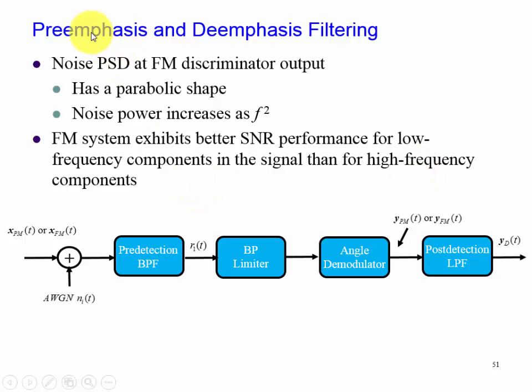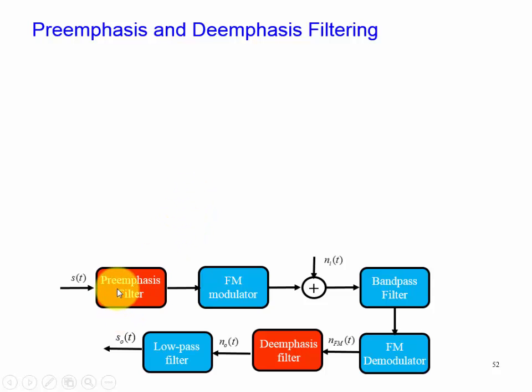what we call our pre-emphasis and de-emphasis circuits. So what we do is we introduce a filter known as a pre-emphasis filter where we treat our signal and emphasize the high frequency components of our signal. And then